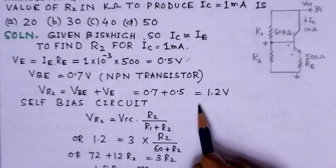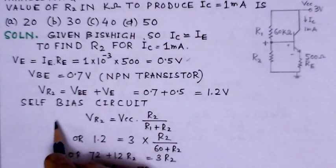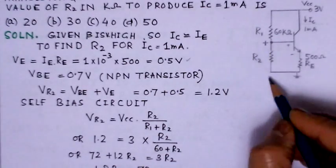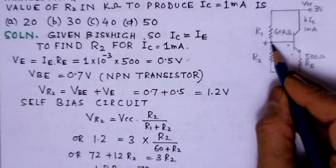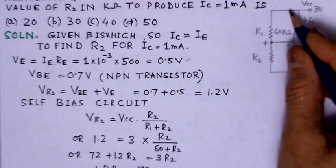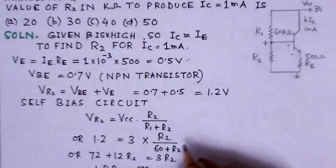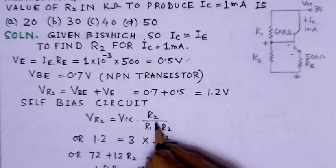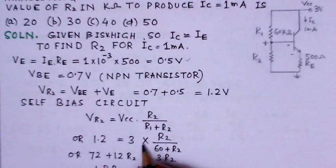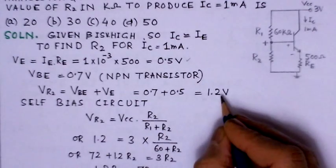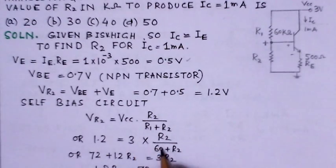So, 1.2 volts is the value for VR2. Now, for the self-bias circuit, this VR2 can be - you can find out the value of VR2 is VCC, the voltage drop into R2 upon R1 plus R2. So, this R2 upon R1 plus R2, VR2 is known here and VR2 is 1.2 volts which we have already determined. So, this is 3 into R2 upon R1 plus R2.